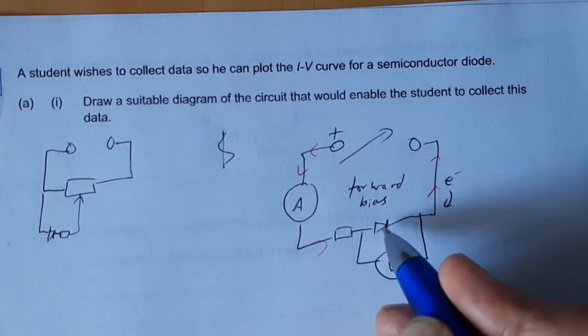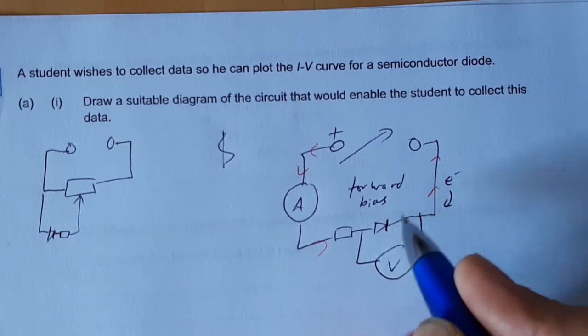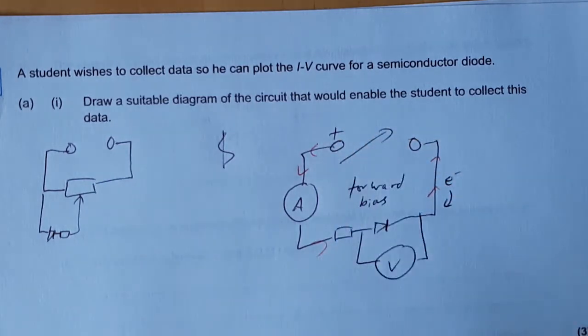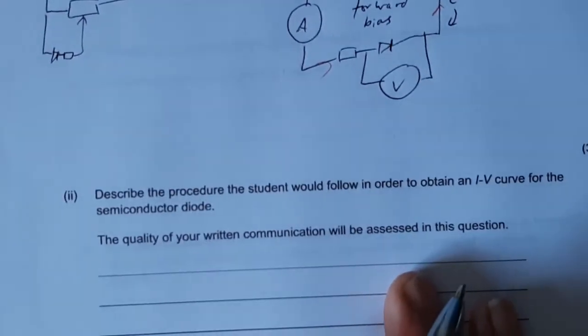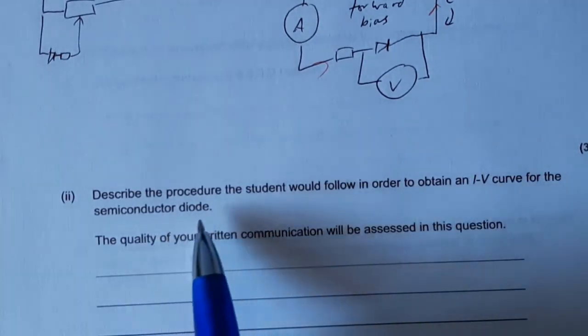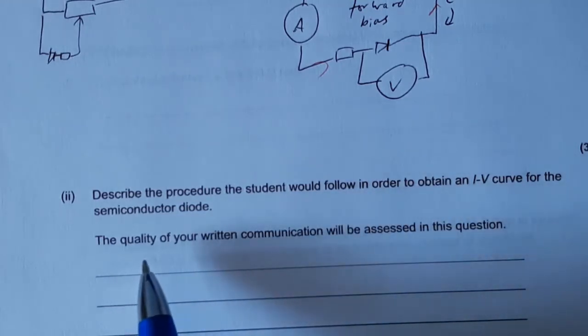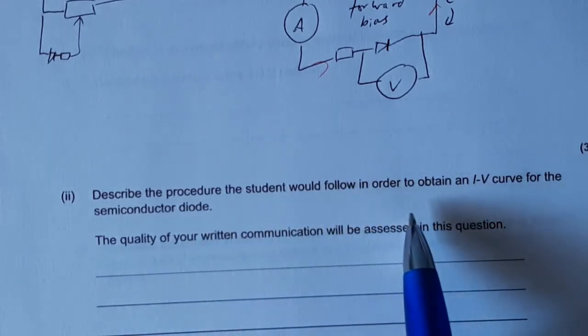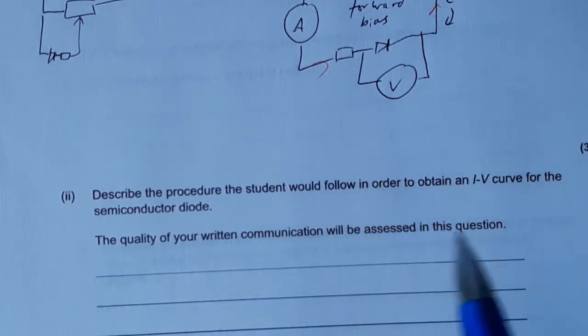To do the reverse bias, we turn the diode around or we swap the leads in the power supply, but of course not both. So we've talked about the procedure here - that's giving a logical set of steps. Set the voltage to 10 different values, record the current for each value, repeat with the diode turned round in the other direction for the reverse bias.